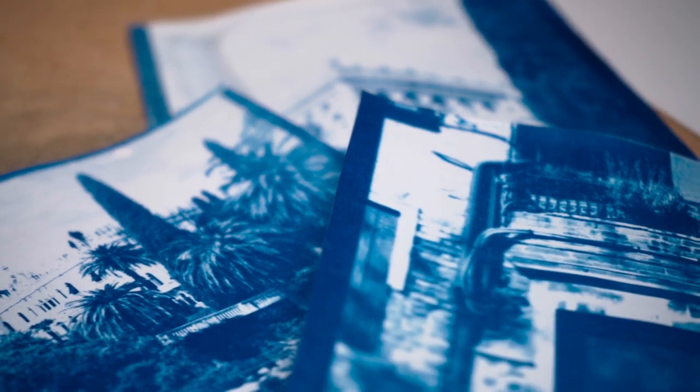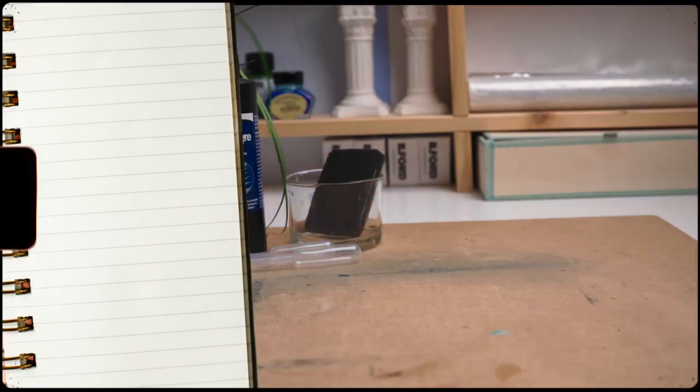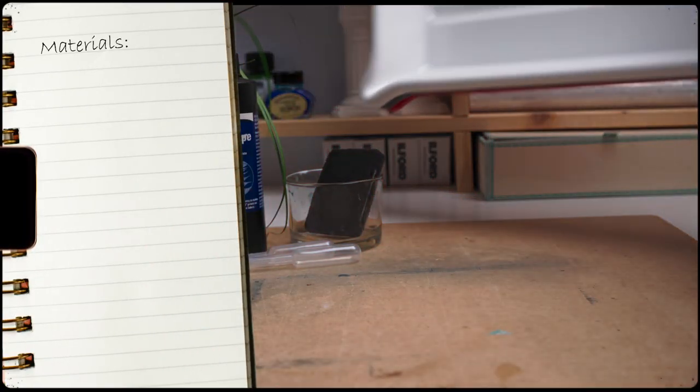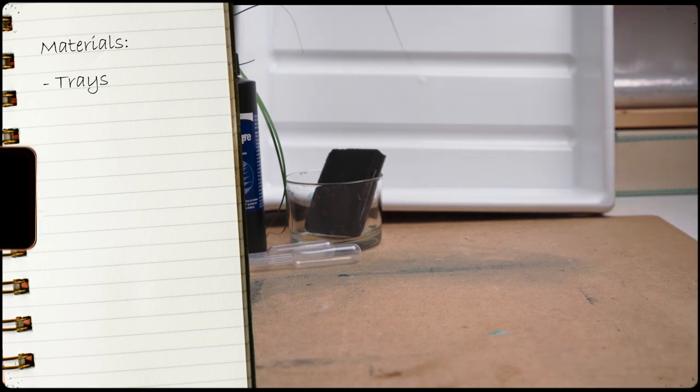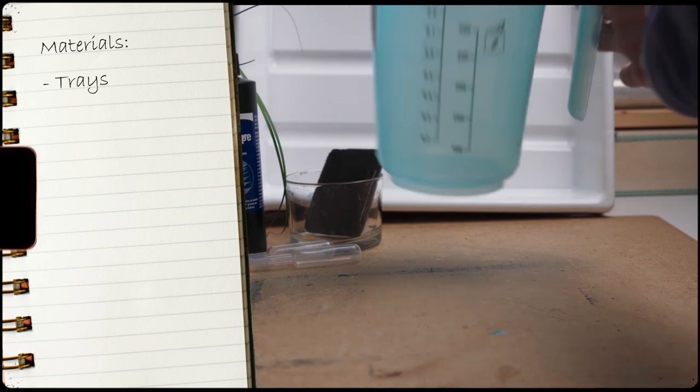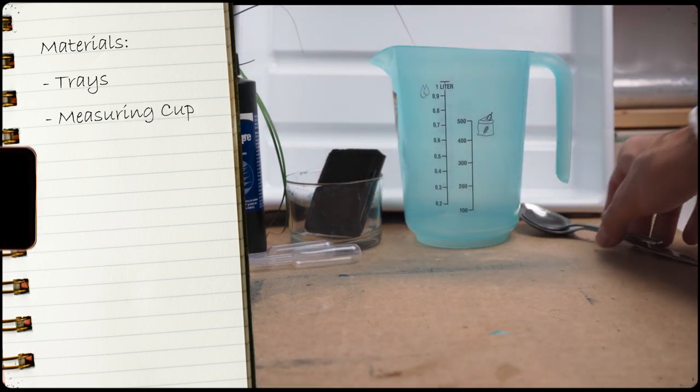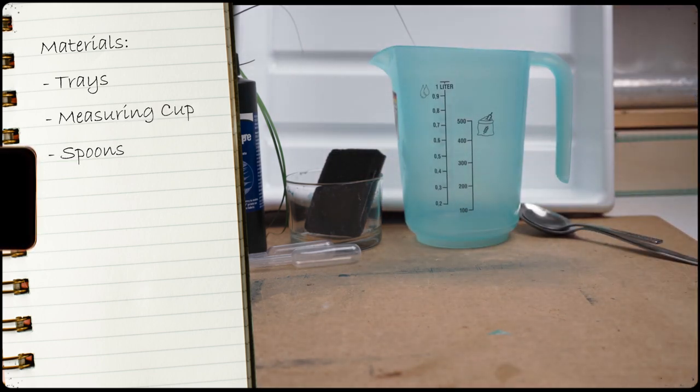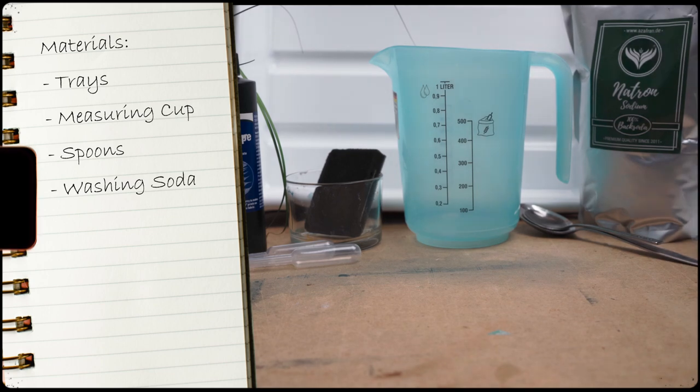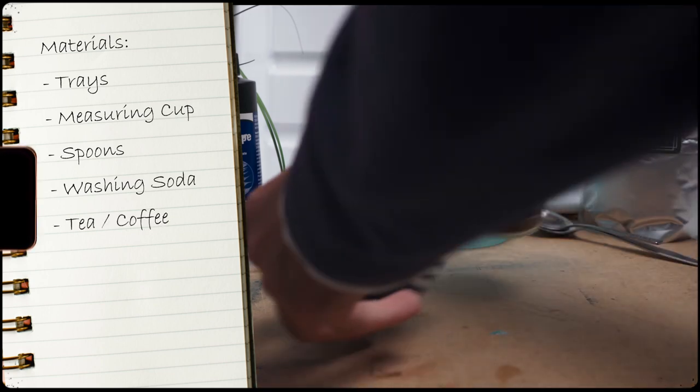Now that I've created the cyanotype prints let's take a look at the remaining materials needed to tone the cyanotype. First you're going to need some kind of dish. I'm going to use these developing trays but any kind of dish that's big enough for your print will work. Next thing you're going to need is a measuring cup and a couple of spoons. Some washing soda and as mentioned before tea or coffee.